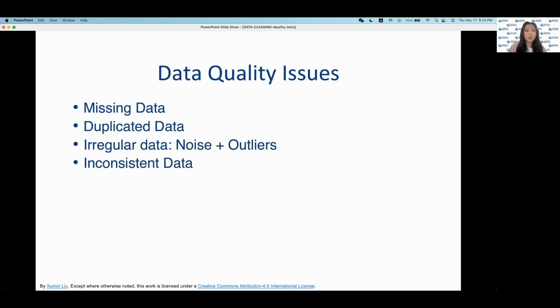So some examples of data quality issues could be missing data, such as null values in data sets, duplicated data, so that would mean the same data object is recorded multiple times, irregular data such as outliers, and inconsistent data, which could materialize like the telephone number example that I had mentioned earlier.